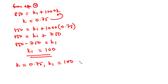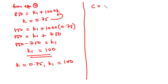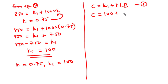Now let's write down the relationship between C, L, and B. From equation 1 we had C equals k1 plus kLB. Substituting the values of k and k1, we have C equals 100 plus 0.75 times L times B. This is the relationship between C, L, and B.